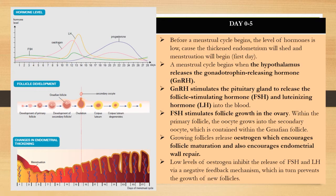The normal menstrual cycle is 28 days, after which a new cycle begins. The graph shows follicle development from Day 0 to Day 28, and also the changes in endometrial thickening across the same period. Let's now discuss what happens during Day 0 to Day 5.